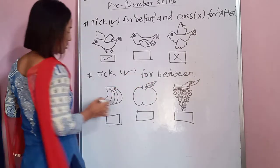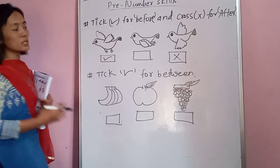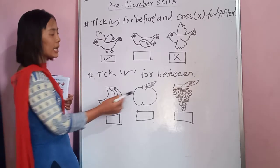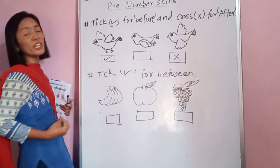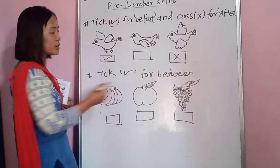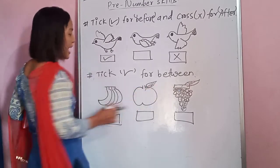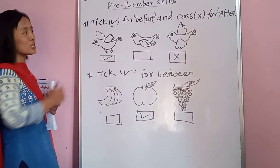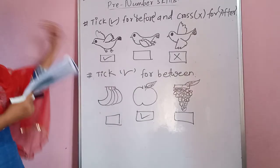For the next question, tick the picture that is 'between'. Here there are banana, apple, and grass. Among these figures, which one is the fruit that lies between? Obviously from this picture you can identify that apple is in between — apple is between the banana and grass. So you have to tick apple. This is the way to solve this type of question.